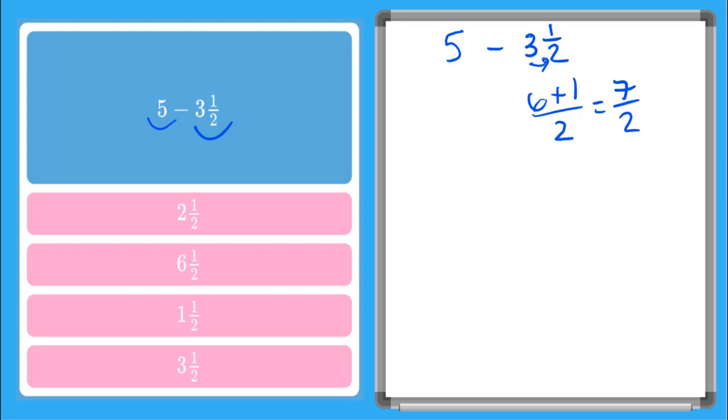But now I have this 5 here, my whole number. So as a fraction, that looks like 5 over 1. If I need to get a 2 on the bottom, I need to have the same denominator. I'm going to multiply it by 2 over 2. So if I multiply across the top, I get 10. Across the bottom, I get 2. So now I can subtract 10 over 2 minus 7 over 2.